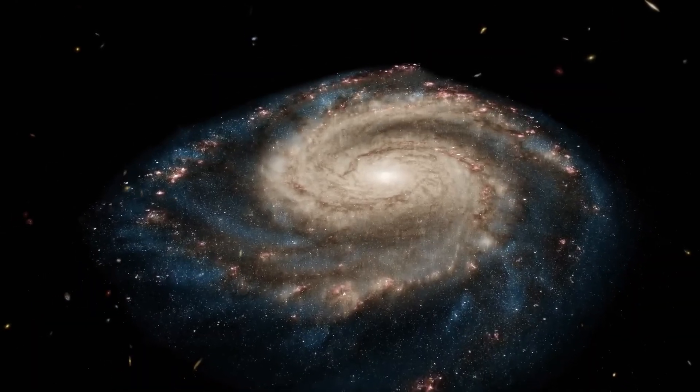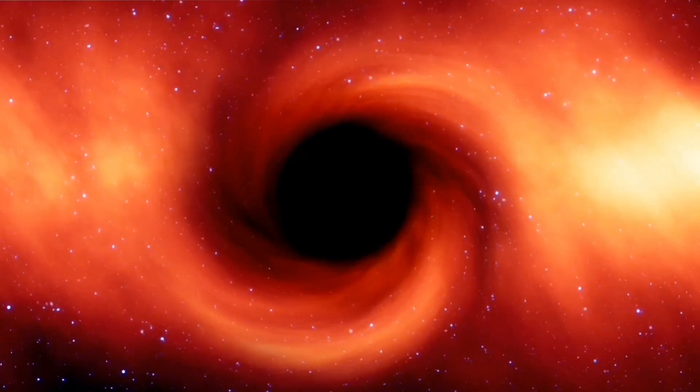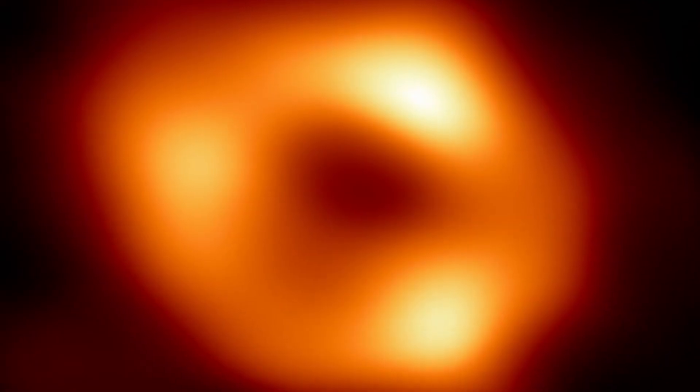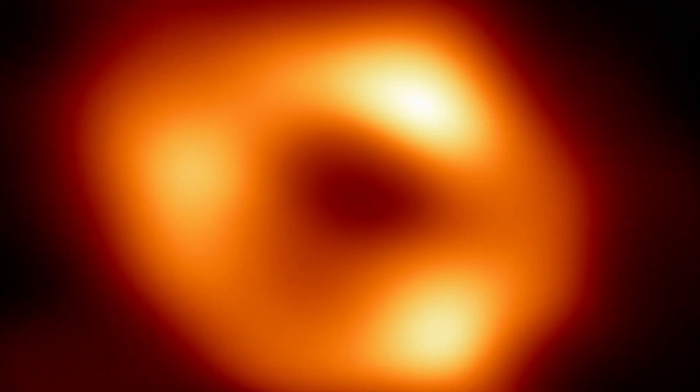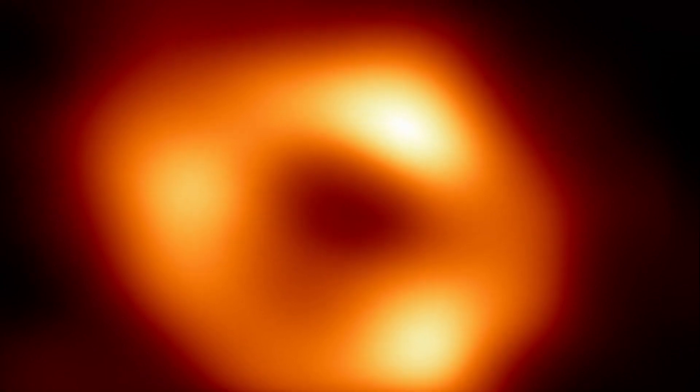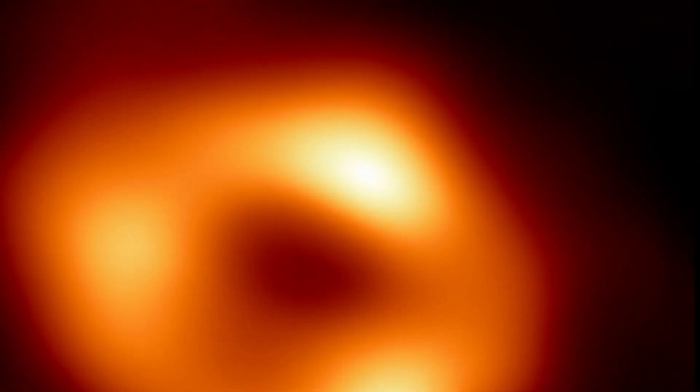However, black holes are surrounded by clouds of gas, and astronomers can measure this gas to produce images of the black holes. Within the central dark region in the image is a shadow cast by the black hole onto the gas cloud, and the bright ring is the gas itself glowing. The bright spots in the ring show areas of hotter gas that may one day fall into the black hole.